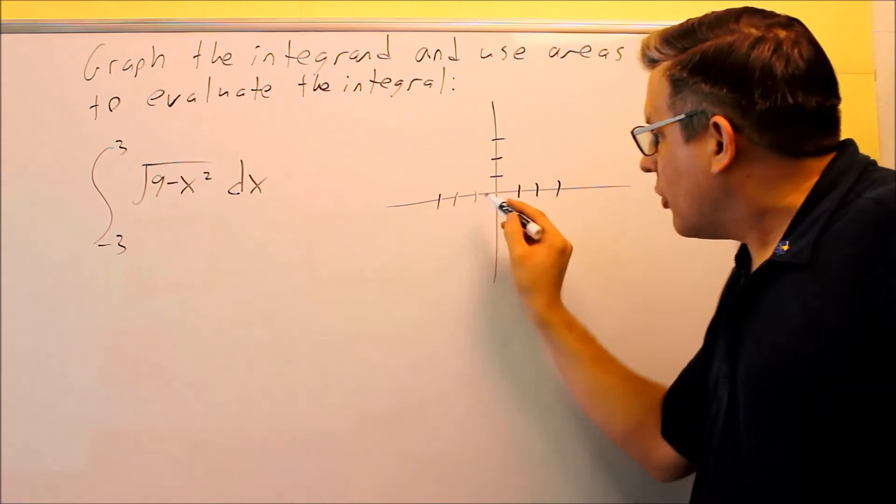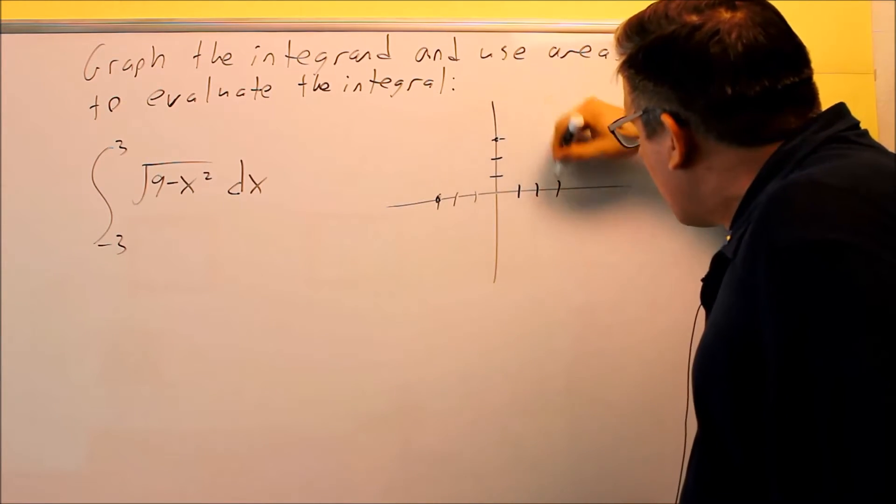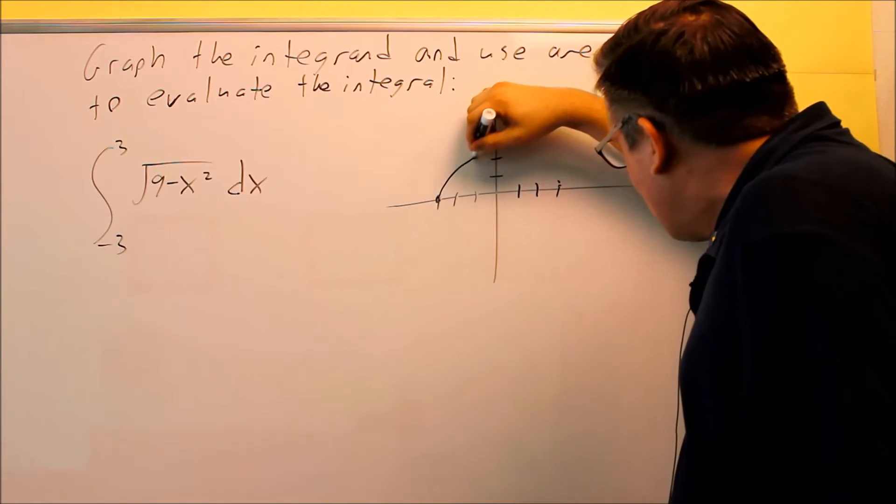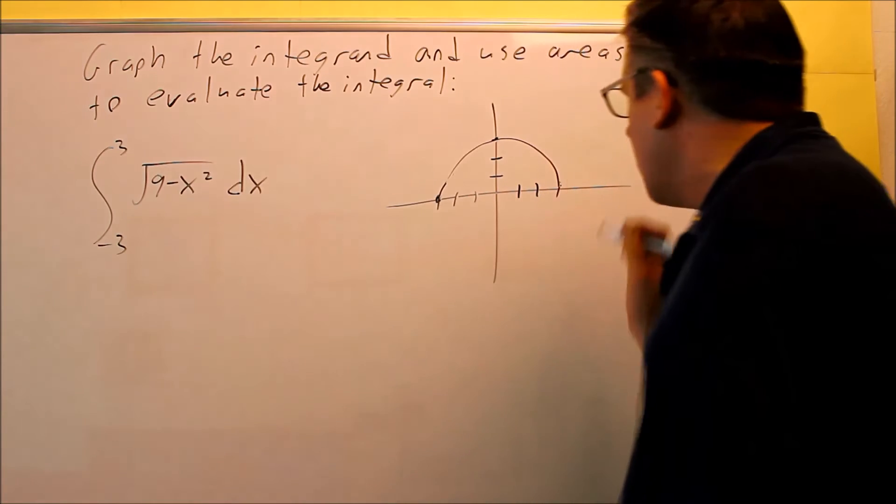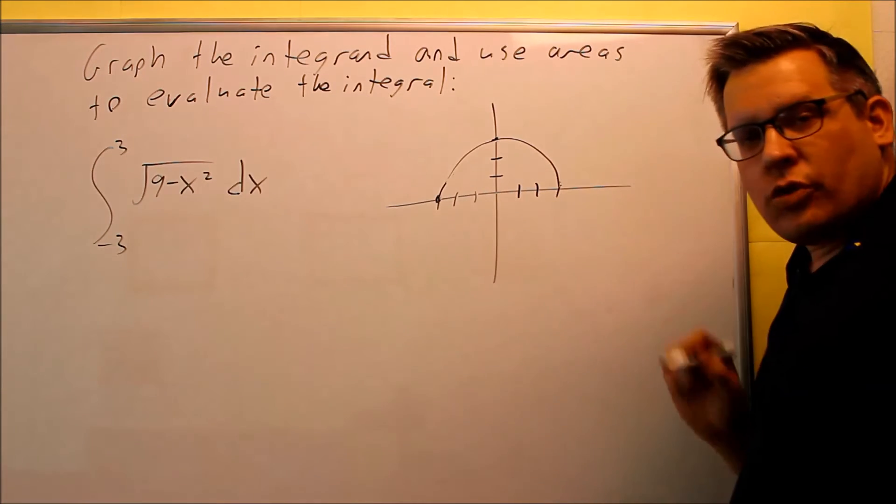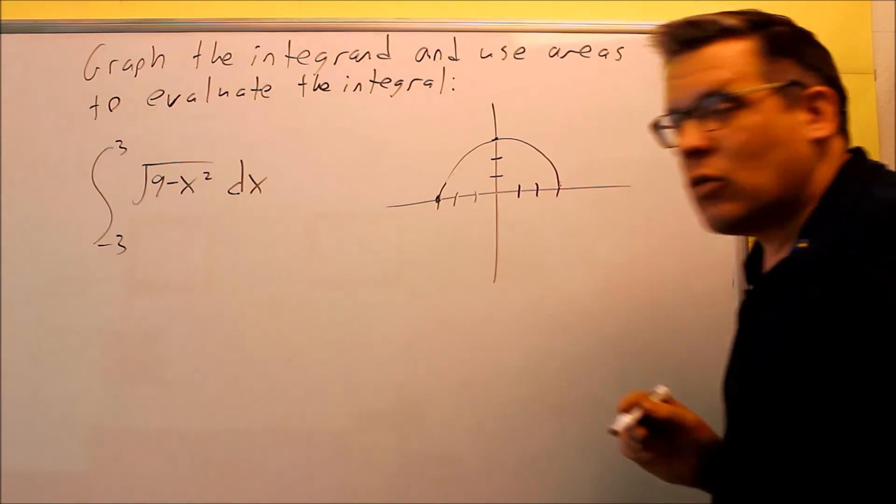If you had a 4 here, 4 minus x squared, then 2 would be the radius. But essentially it's going to be going through just like it'll go through like this. So it'll come up here and then end there. So the domain is only between negative 3 and 3 because if you put anything outside of that, it's not going to work inside there.